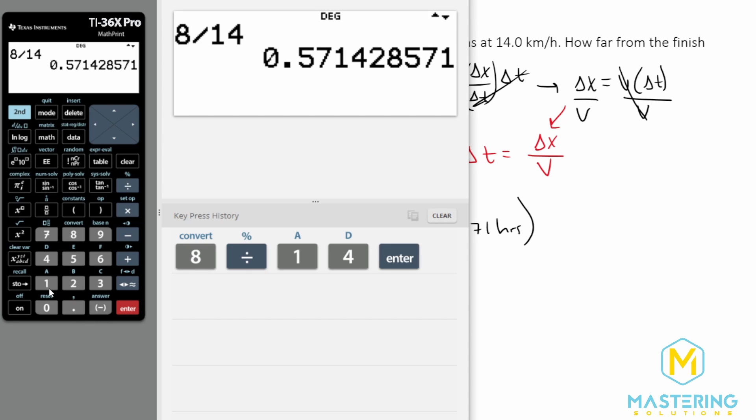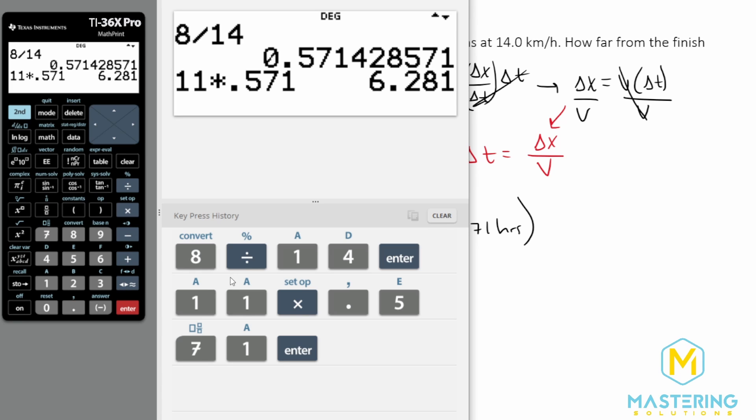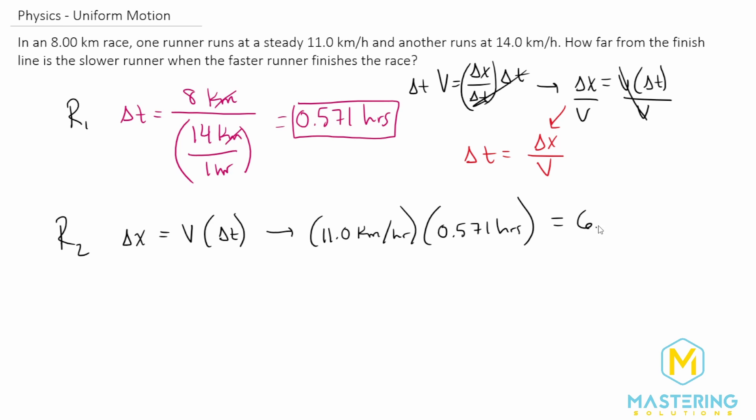And that gives us 11 times 0.571. We have 6.29 kilometers was their position.